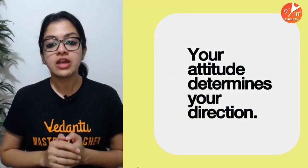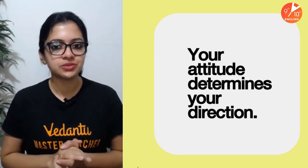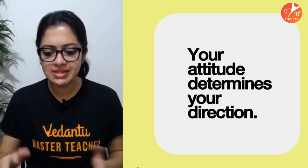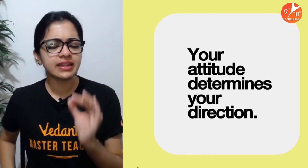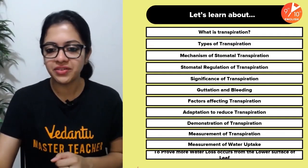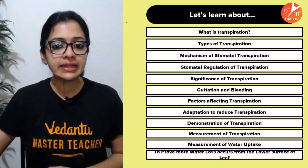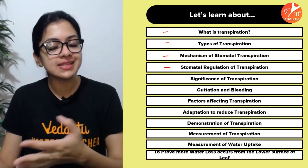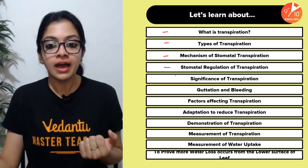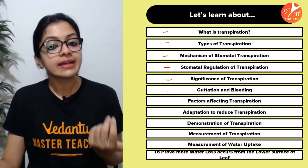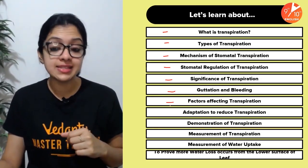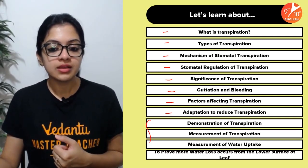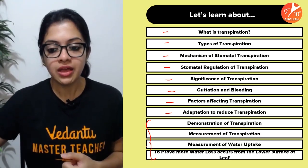As always, I'd love to start with a positive quote: remember, your attitude determines your direction. In this chapter we mainly learn about what transpiration is, the different types of transpiration, the mechanism of stomatal transpiration, the significance of transpiration, guttation and bleeding, the factors affecting transpiration — both external and internal — adaptations to reduce transpiration, and several related experiments.